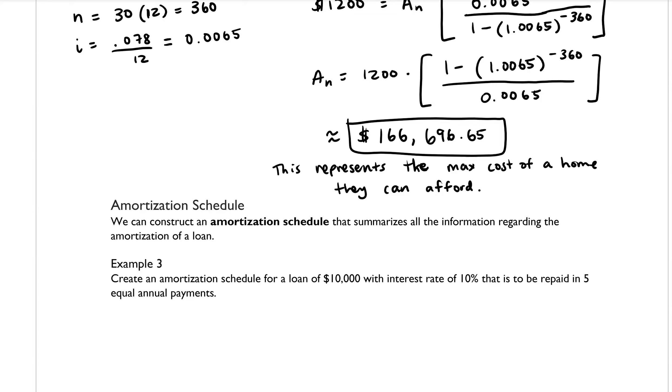Alright, the next thing that we want to talk about is called an amortization schedule. So we can construct an amortization schedule that summarizes all the information regarding the amortization of a loan. It's basically like a table that has a bunch of information about the loan in it. So example three says, create an amortization schedule for a loan of $10,000 with an interest rate of 10% that is to be repaid in five equal annual payments.